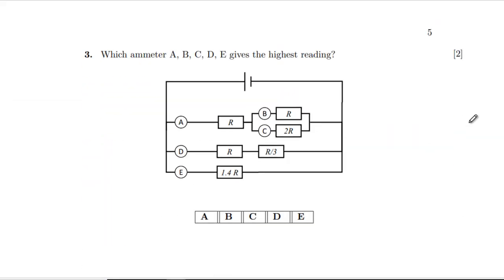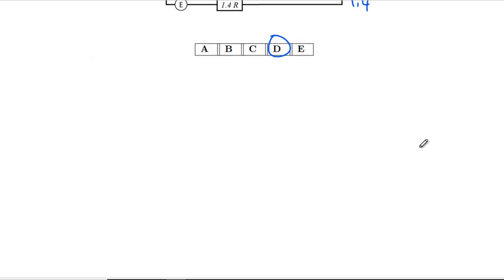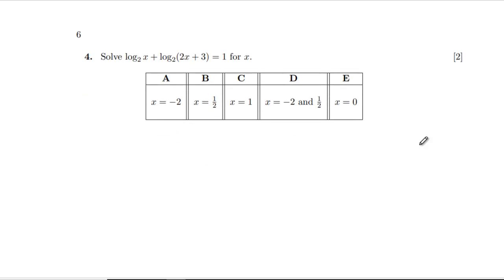Question three: which ammeter gives the highest reading? We want to have the lowest resistance on a branch because they've all got the same potential difference. So we've got 1.4, 1.3, that's going to be 1.6 recurring, so it's going to be D. Same old thing with the circuit ones. They're always really quick. Question four: solve this. We can combine those and then do an anti-log on it, so we'll add x times 2x plus 3 equals 2.